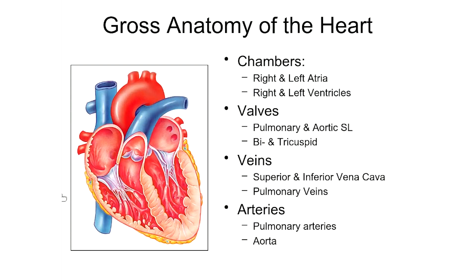This valve right here sits between the right atrium and the right ventricle. This valve is known as the tricuspid valve. Its role is to ensure that when blood moves from the atria down into the ventricles, and when the ventricle contracts and applies pressure to that blood, it doesn't force the blood backwards into the atria. The tricuspid valve does that on the right side.